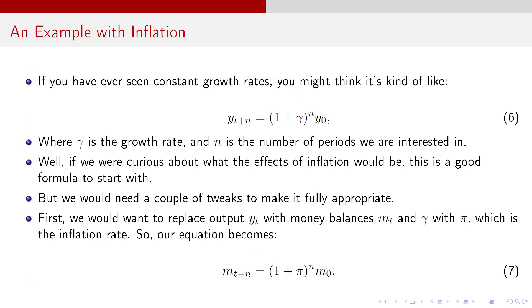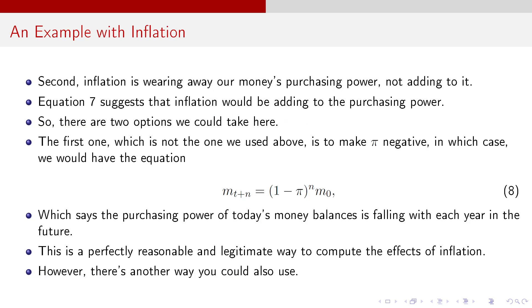Now, if you've ever seen constant growth rates, you might think it's kind of like what you see in equation six. Y_{t+N} equals (1+gamma)^N times Y_0, where gamma is the growth rate and N is the number of periods that we're going to be interested in. Well, if we're curious about what the effects of inflation would be, this is a pretty good formula to start with. But we would need a couple of tweaks really to make it fully appropriate in the context of inflation. First, you want to replace that Y_t, or it's usually output for Y_t, with money balances M, and gamma with pi, which is the inflation rate. So our equation now becomes M_{t+N} equals (1+pi)^N times M_0.